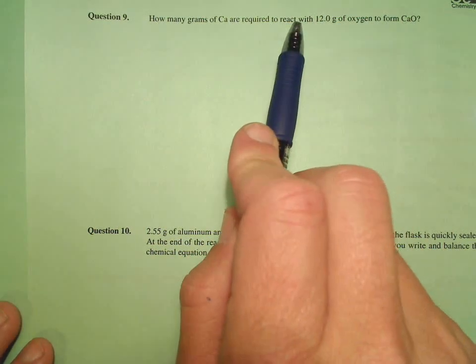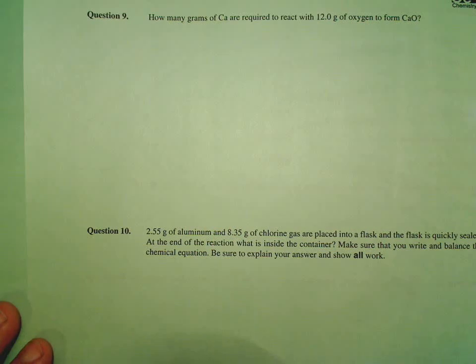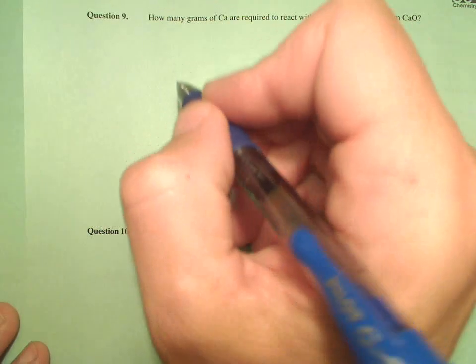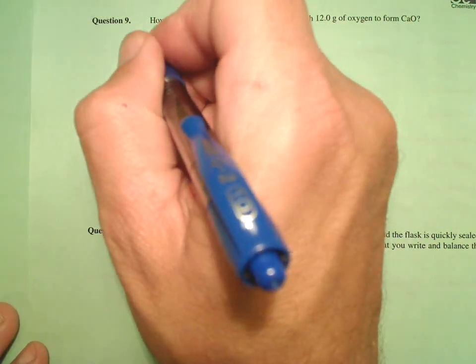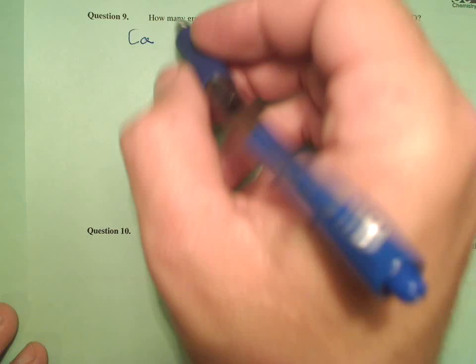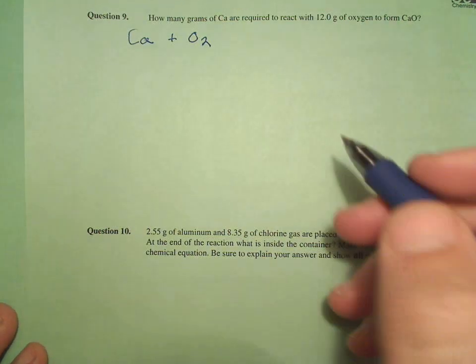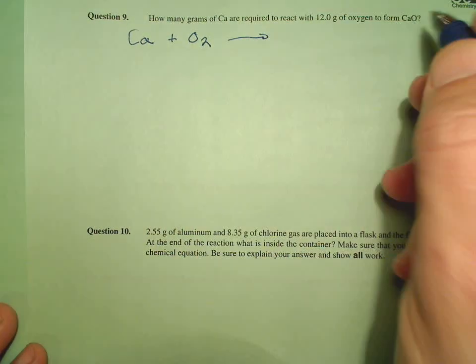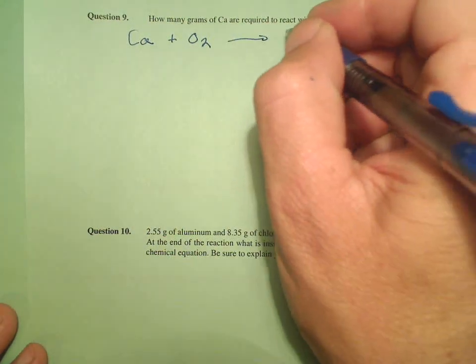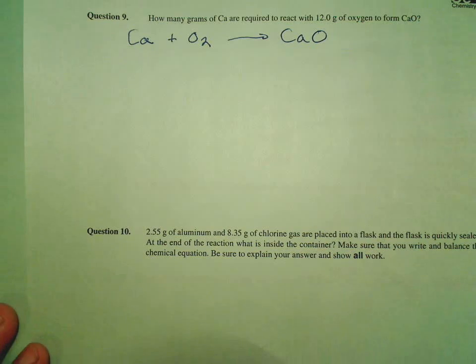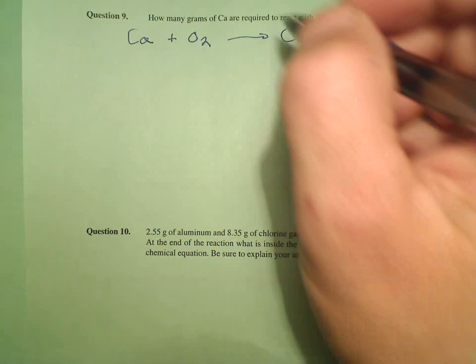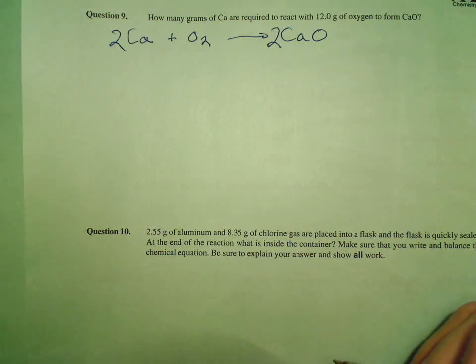So the key words here, react. So we're going to need a balanced equation. I know calcium is one reactant and the other one is oxygen, which we know is O2, to form calcium oxide. So there's our equation. Since it's a stoichiometry problem, we need to balance it. So we need two there, two oxygens, and two calciums. That's good.